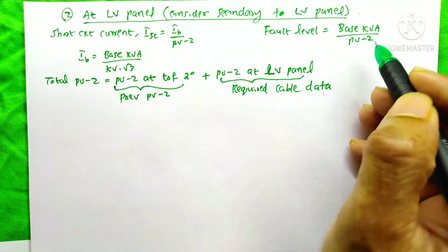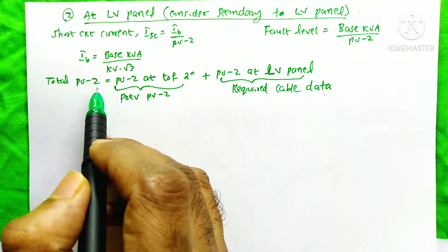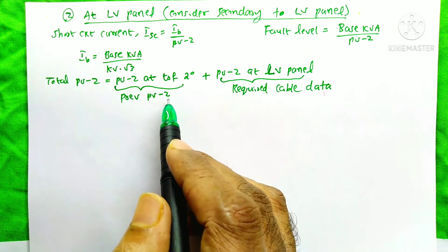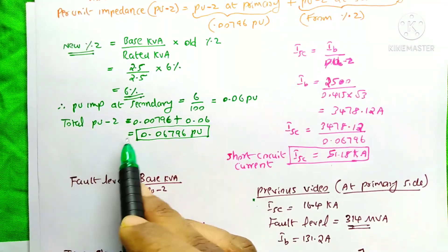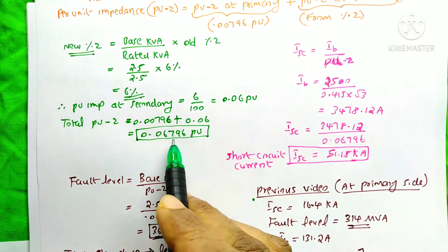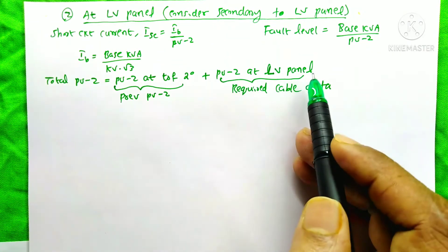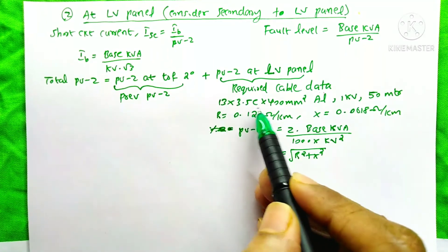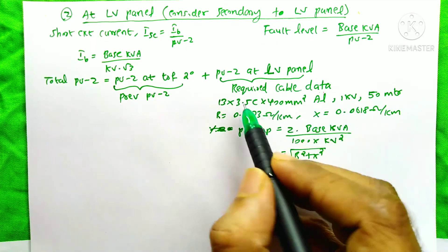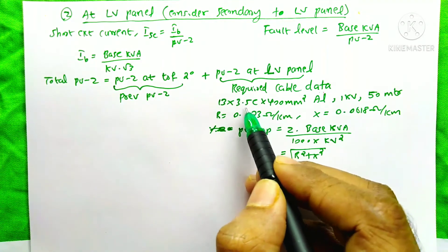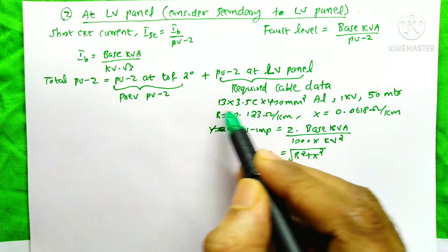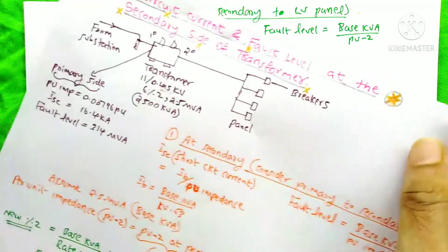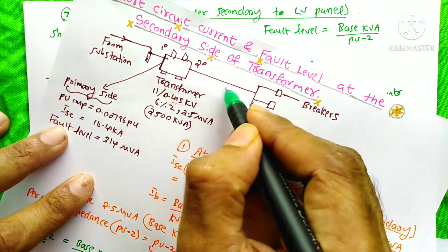The total per unit impedance equals the per unit impedance at the transformer secondary — which is 0.06796 from our previous calculation — plus the per unit impedance at the LV panel. For that, we need the cable data. The cable is 13 runs, 3.5 core, 400 mm² aluminum conductor, rated 1 kV, and 50 meters long from the transformer secondary to the panel. The resistance is 0.123 Ohm per kilometer and the reactance is 0.0618 Ohm per kilometer.